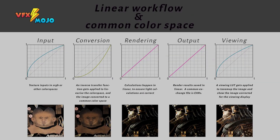First of all, what it all boils down to: render engines and shaders do not have a concept of what color space is. This means the algorithm of a renderer or shader will treat incoming color values equally and linearly, regardless of which color space they are in. Practically, this means we need to make sure any textures fed to our render engine have a linear transfer function applied and are converted to a common color space.